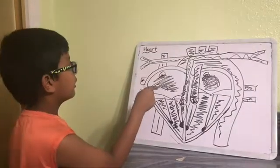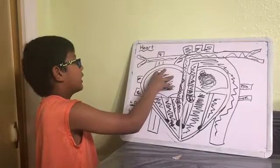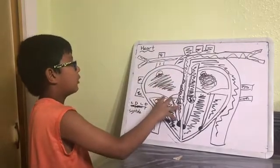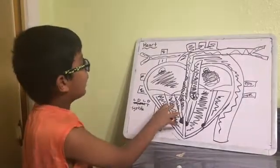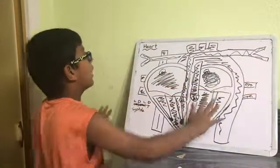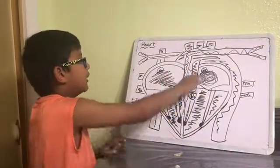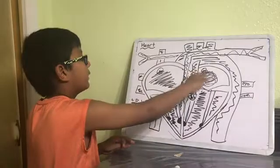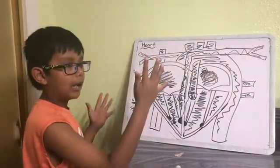Okay. So this is the tricuspid valve. I would go from the right atrium to the right ventricle via this valve. And then I would get pumped out into the lungs. And then I would come back to the heart and then get pumped out via the mitral valve into the rest of the body.